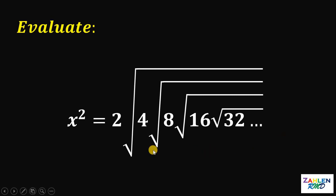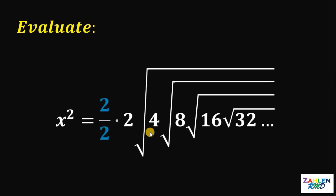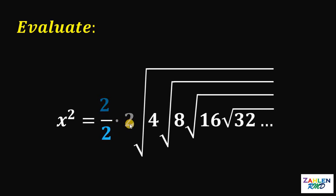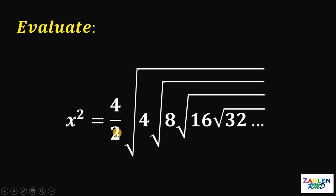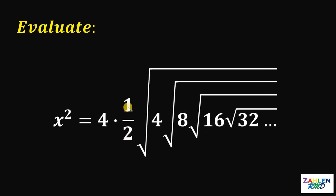Now what we're going to do is multiply the right-hand side by 2 over 2. Take note that 2 over 2 is just 1. Let's multiply 2 over 2 times 2 — this gives us 4 over 2. Now let's separate 4 over 2 into 4 times one-half.